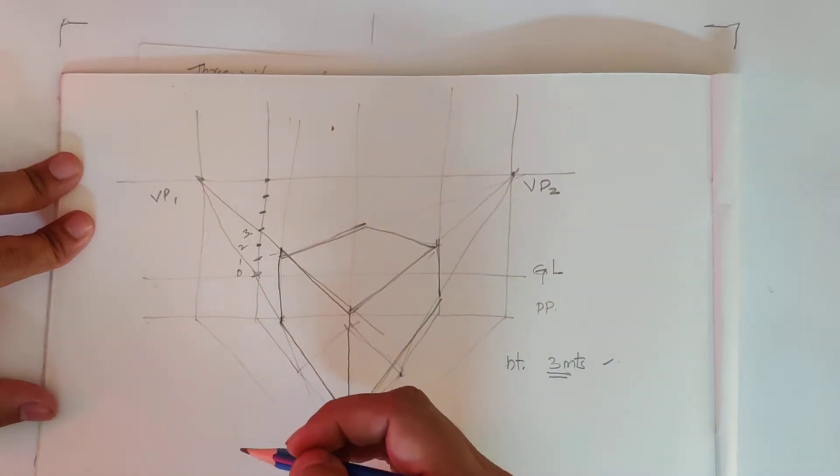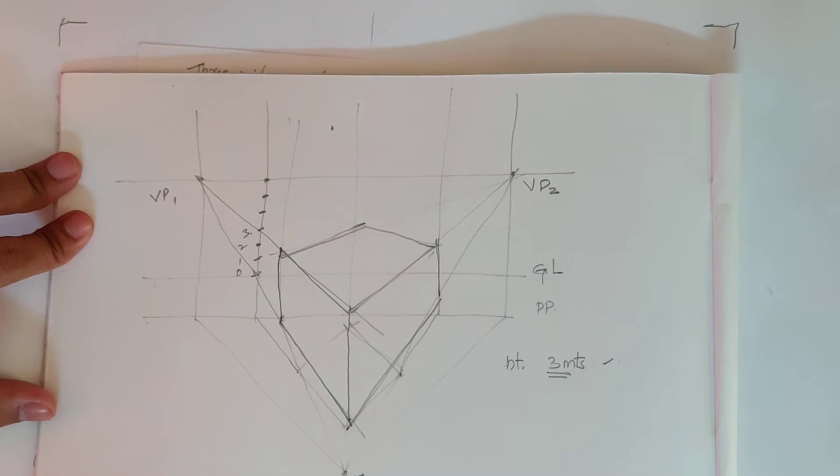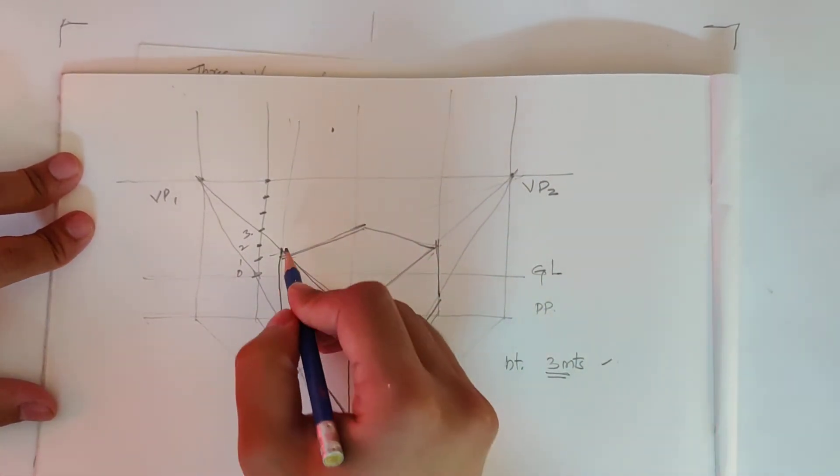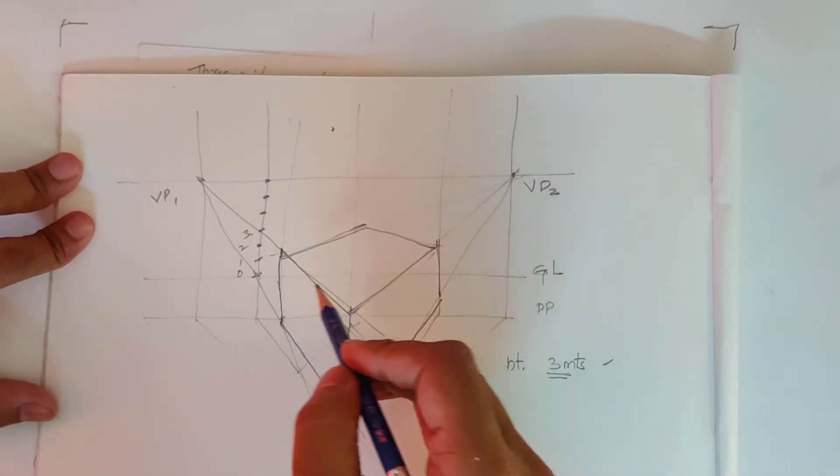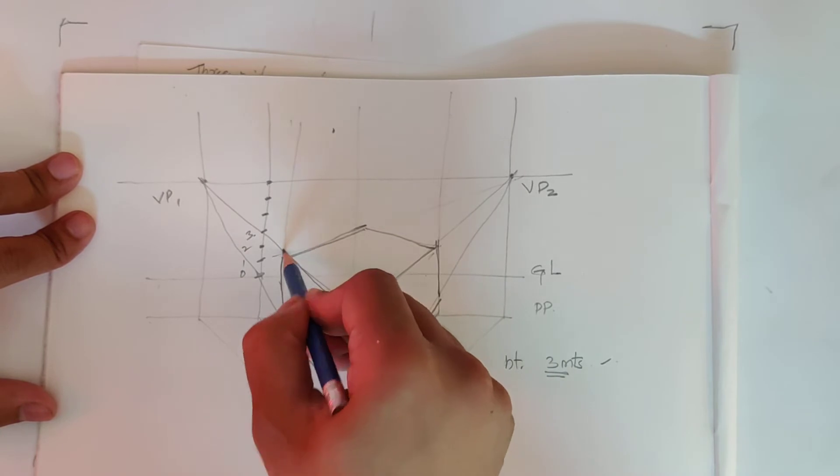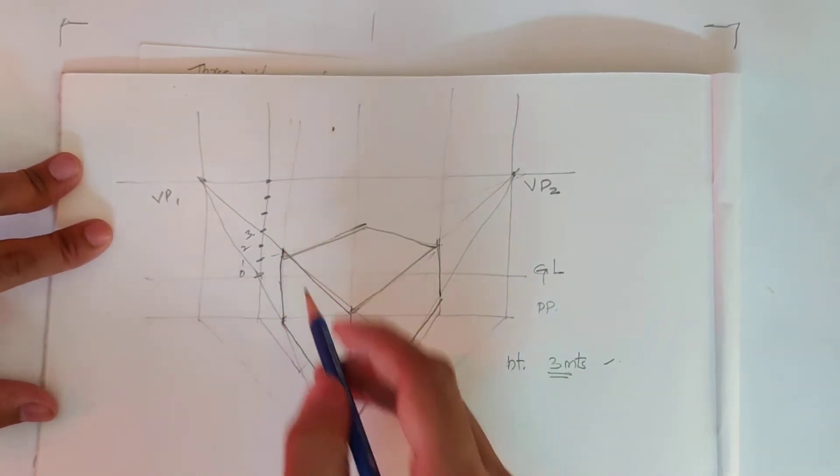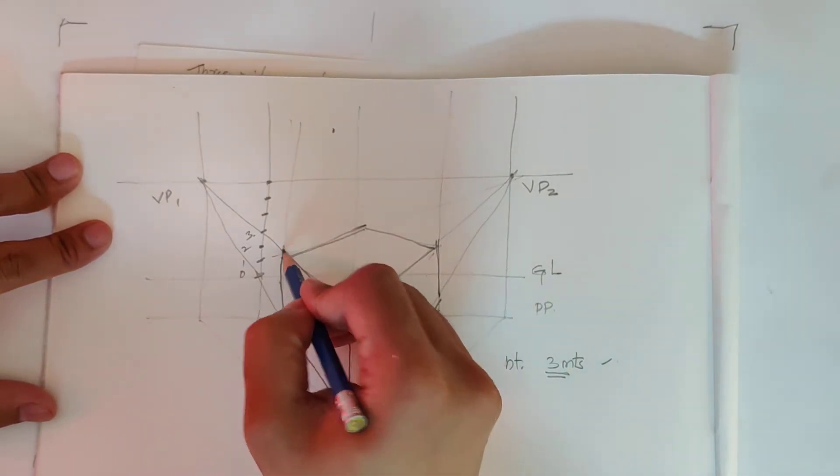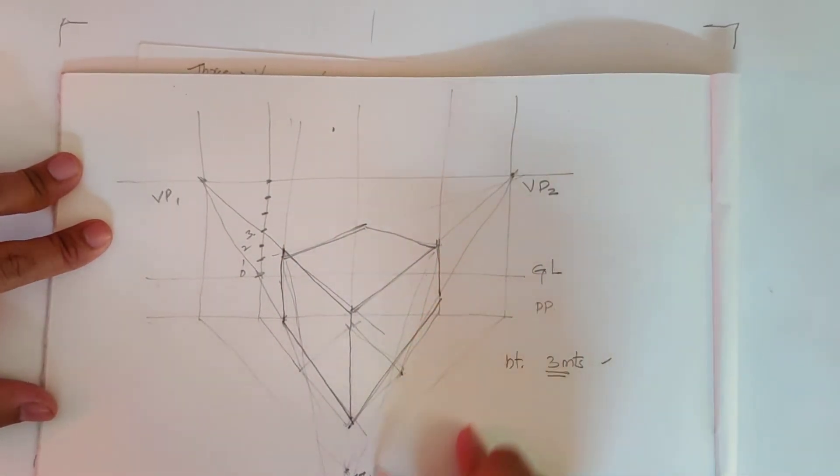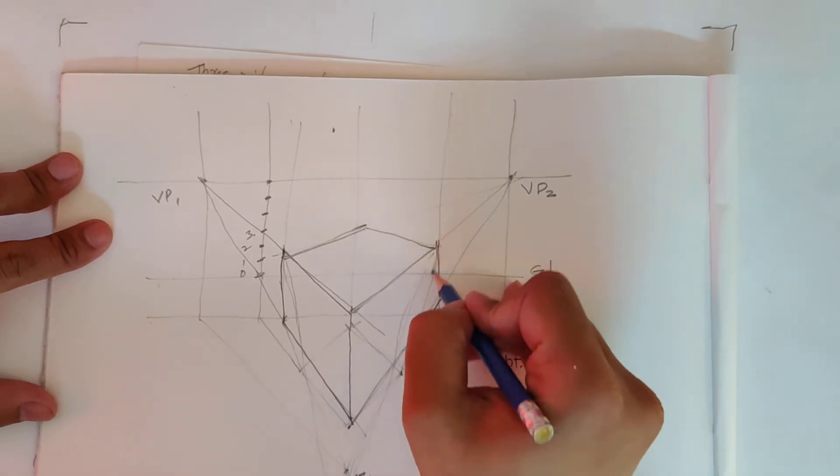The more close you take your object, the steeper this angle would become. So I would recommend to take it a bit further from the object. So to vanish the heights, we have to take the top height and vanish it. We will match this side. This will go like this, this will go like this.